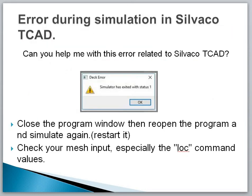The first error during simulation in Silvaco TCAD is the simulator has exited with status 0 and status 1 error. This is an error you will mostly face during simulation with the Silvaco TCAD tool. There are two solutions to get out of this error. The first solution is to close the program window, reopen the program window, and simulate again — or you can restart your PC to remove this error.